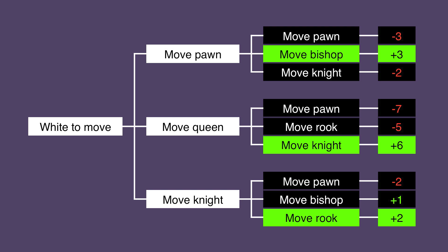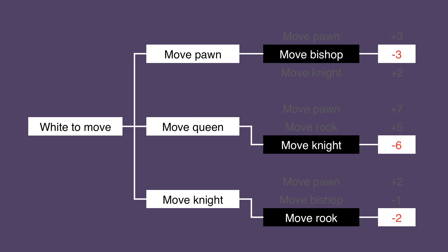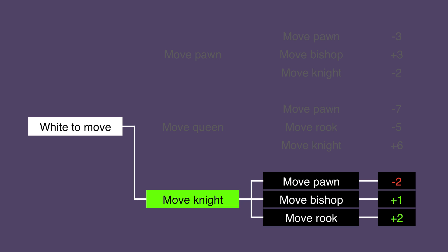Each highlighted score is the maximum score Black can have in response to a given move by White. White wants to minimize the damage by choosing the option that will be lowest for Black. Since this is a zero-sum game, he can look at it from his own perspective and choose the option that gives himself the best payoff. If he moves his Pawn, the worst possible score for him will be negative 3. If he moves his Queen, the worst outcome is negative 6. And if he moves his Knight, the worst outcome is negative 2. Negative 2 is the best score he has, so White should choose to move his Knight.